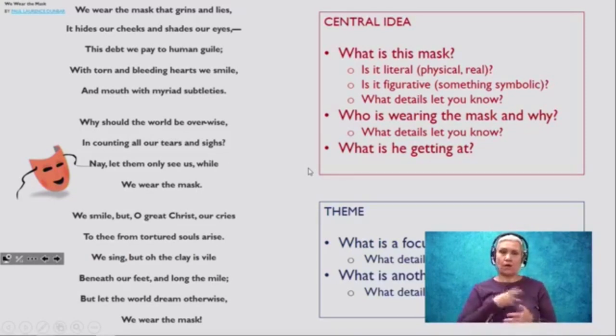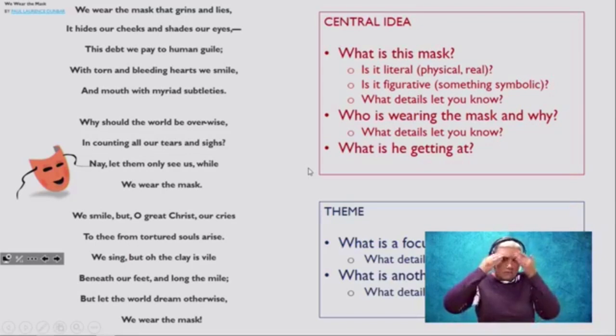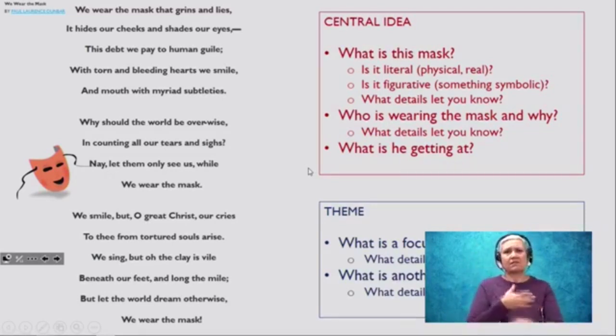I'm going to read the poem for you. And as I'm reading, I want you to think about what are some images, what are some details that you pull out that are really important. We wear the mask that grins and lies. It hides our cheeks and shades our eyes. This debt we pay to human guile with torn and bleeding hearts. We smile and mouth with myriad subtleties. Why should the world be overwise in counting all our tears and sighs? Nay, let them only see us while we wear the mask. We smile, but O great Christ, to thee from tortured souls arise. We sing, but O the clay is vile beneath our feet and long the mile. But let the world dream otherwise. We wear the mask.